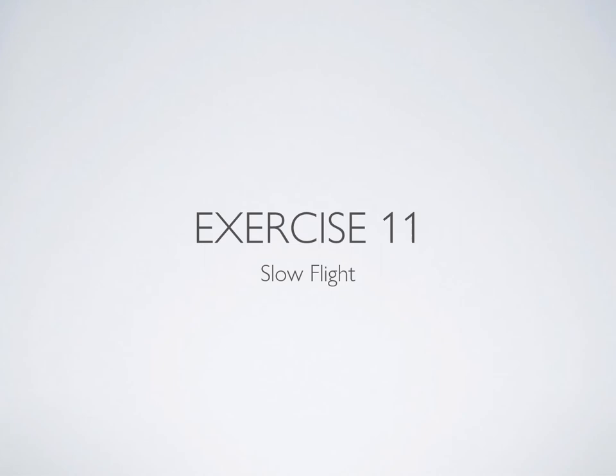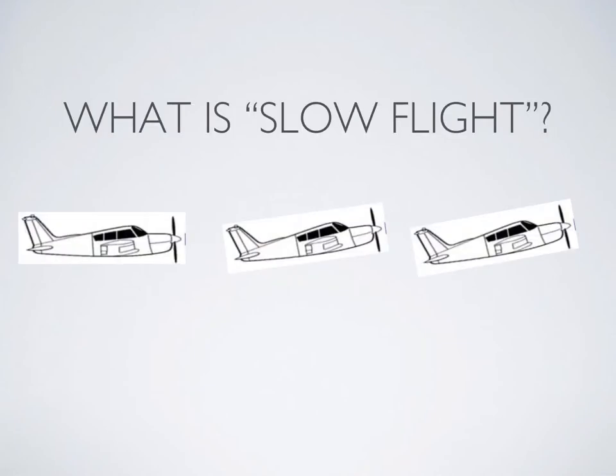Welcome to your ground instruction for exercise 11 from the flight training manual, which is all about slow flight. Slow flight is flying at a reduced airspeed — specifically a particular range of airspeeds. If you haven't already watched the slideshow for exercise 10, I highly recommend reviewing that one first, because we're going to skip over a whole bunch of stuff covered there.